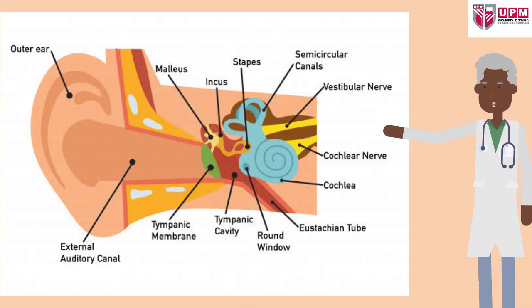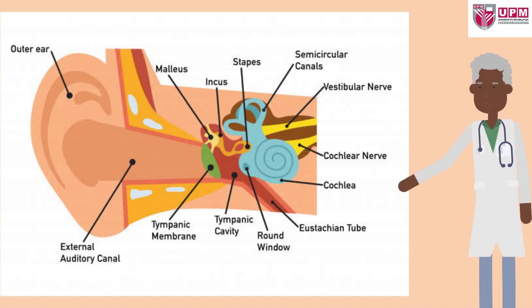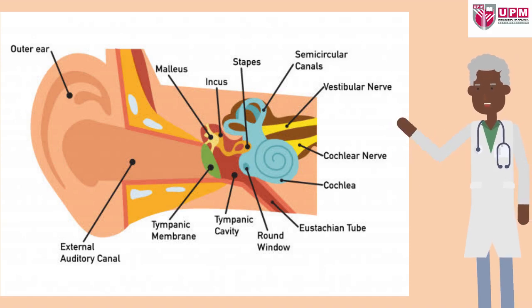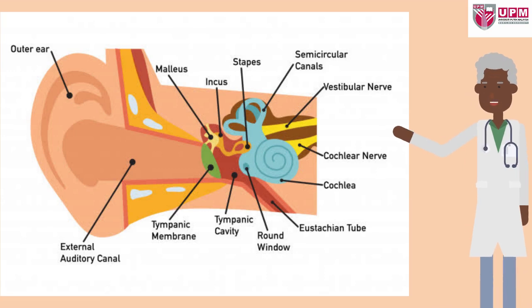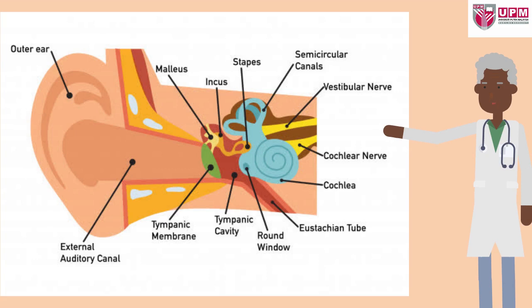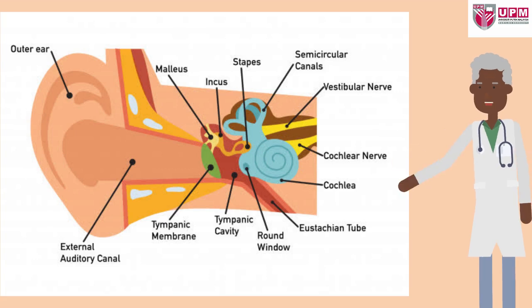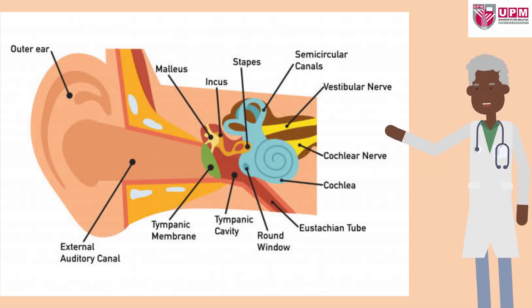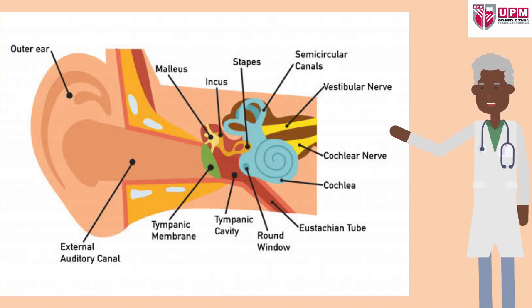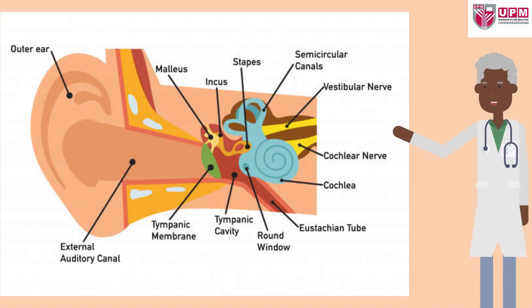Sound waves enter the ear canal and travel toward our eardrums. The sound waves cause the eardrum and bones in the middle ear to vibrate. Tiny hair cells inside the cochlea, the inner ear, convert these vibrations into electric impulse signals that are picked up by the auditory nerve.